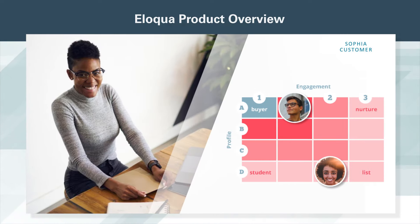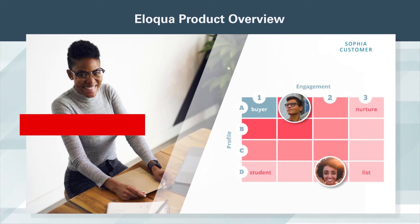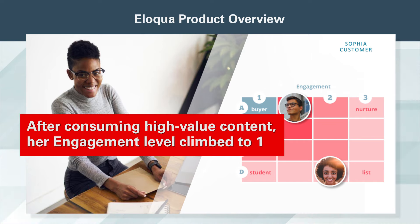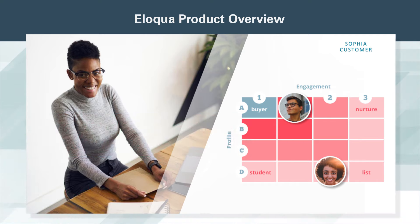Sophia's lead score is based on her profile data and digital footprint. Her job title is an exact profile target match, placing her in the A category for profile. After consuming high value content, her engagement level climbed to 1, making her total Eloqua lead score A1 — a marketing qualified lead. In less than one minute, her information is pushed into the CRM as a lead and sales is notified.